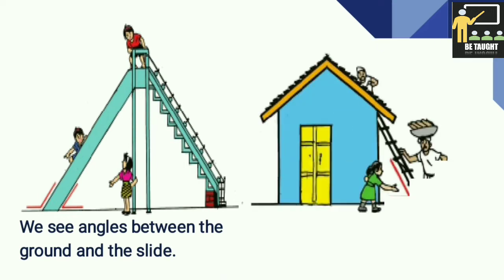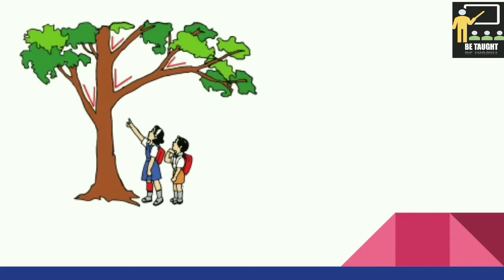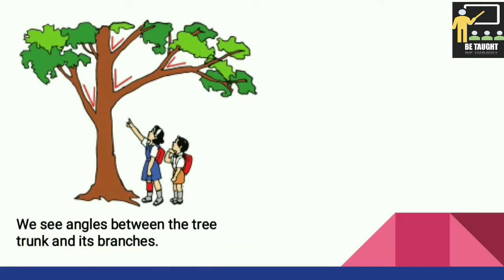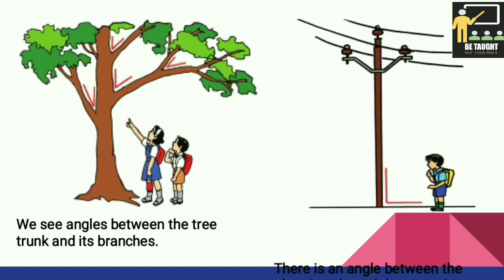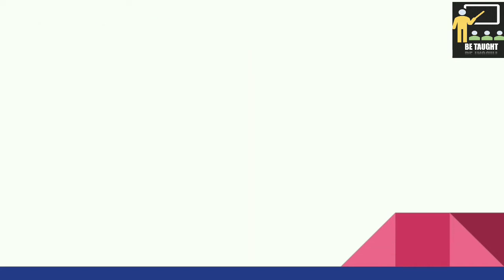In the next picture, we can see the ladder makes an angle with the ground. Here in this picture, we also see angles between the tree trunk and its branches. In this picture, there is an angle between the electric pole and the ground.